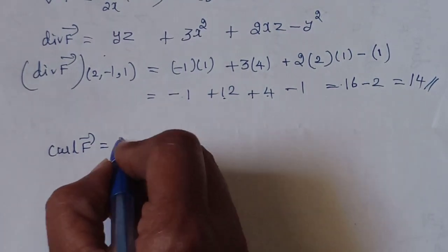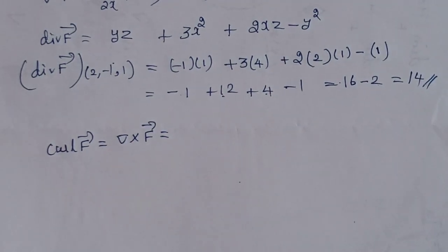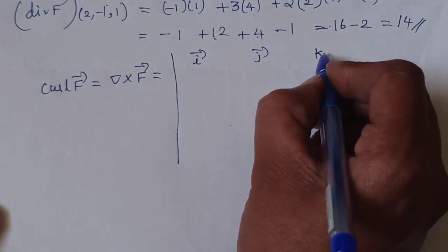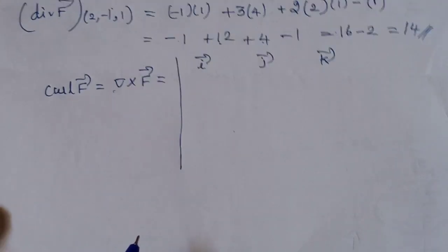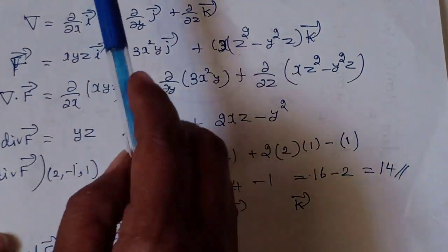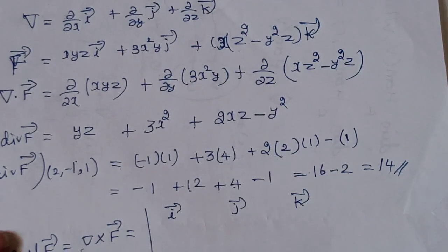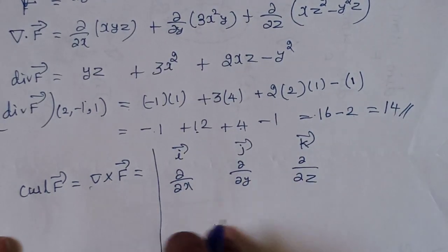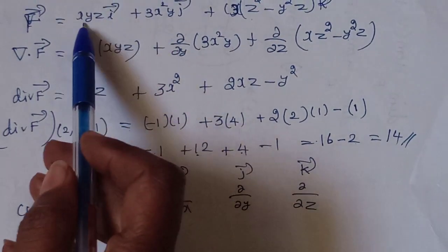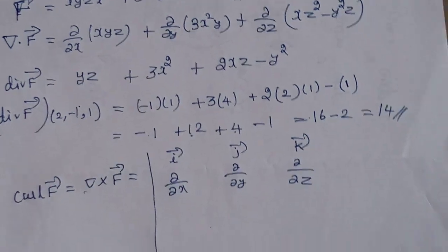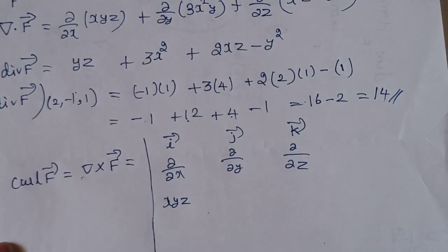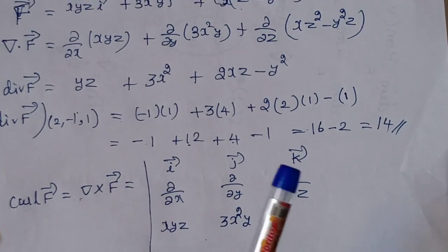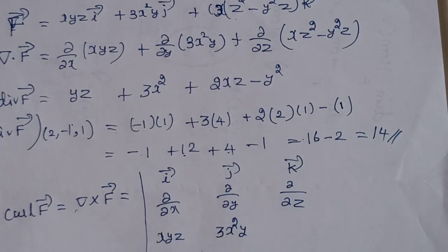Now curl of F is the same paper. Curl F is del cross F vector. Del cross F is a 3×3 determinant. The first row is i-vector, j-vector, k-vector. The second row is the del component — the vector operator — so: d/dx, d/dy, d/dz. The third row is the F vector components: i-component is xyz, j-component is 3x²y, and k-component has 2 terms: 2x²z minus y²z.